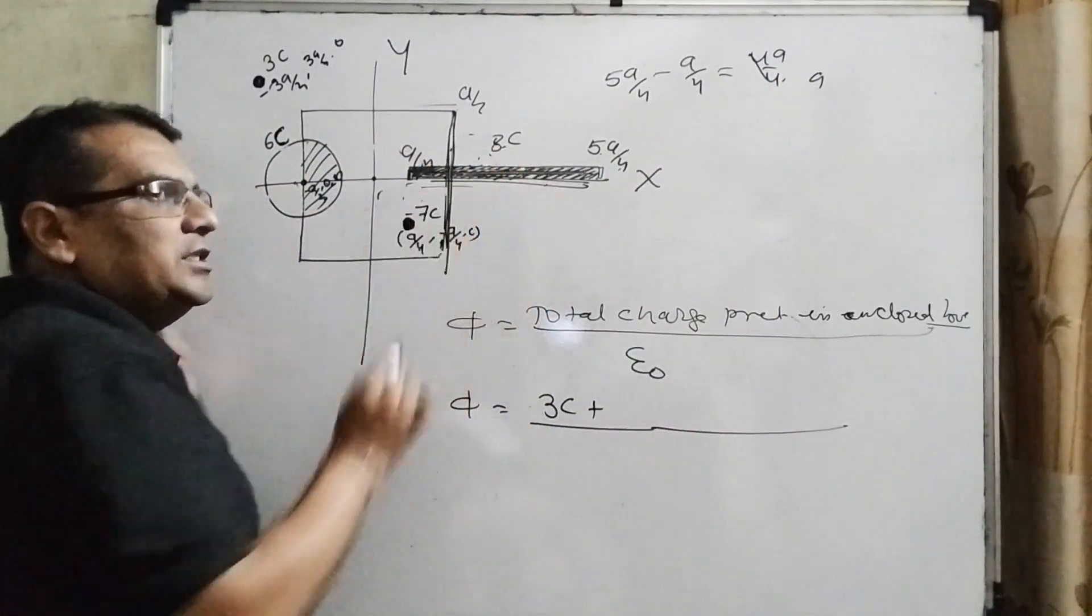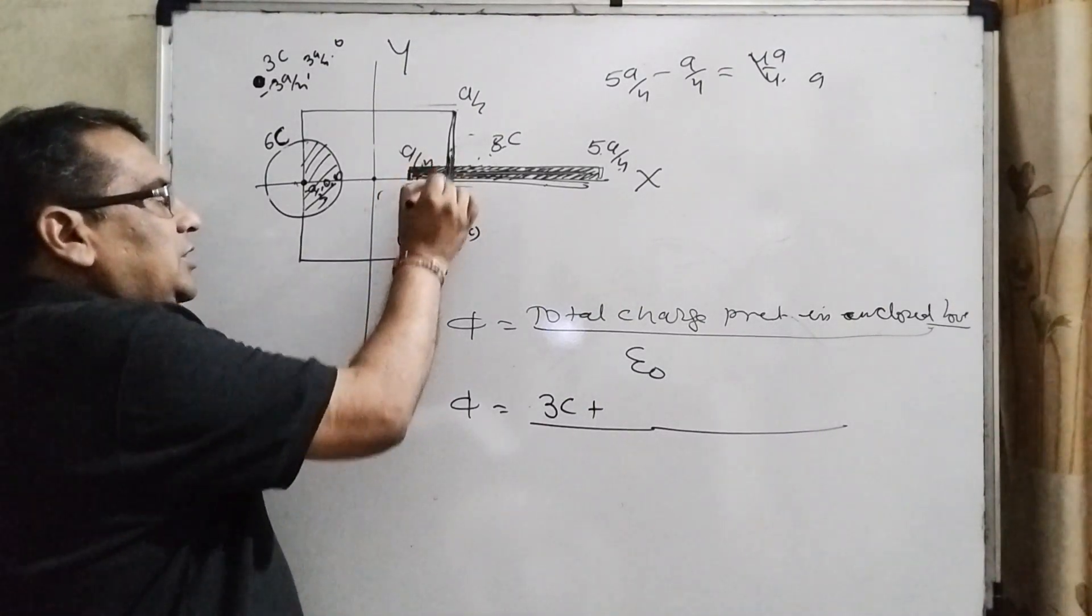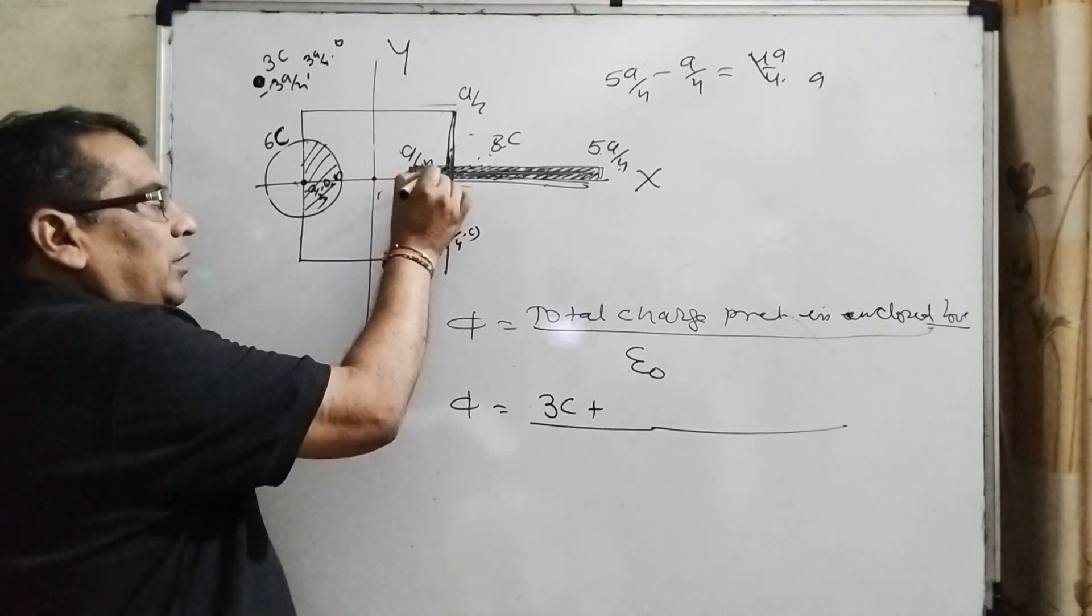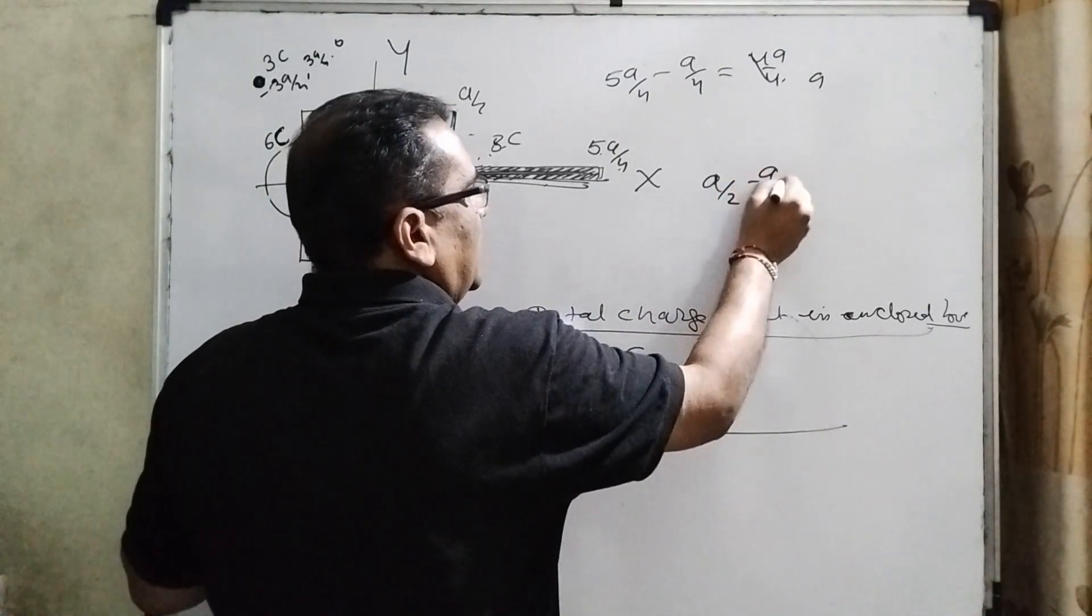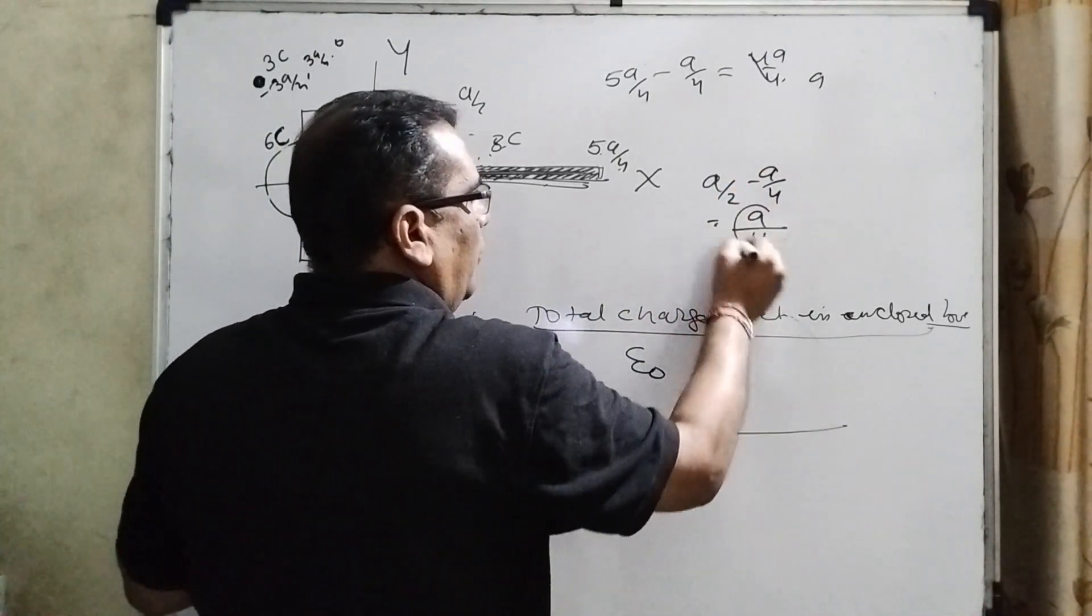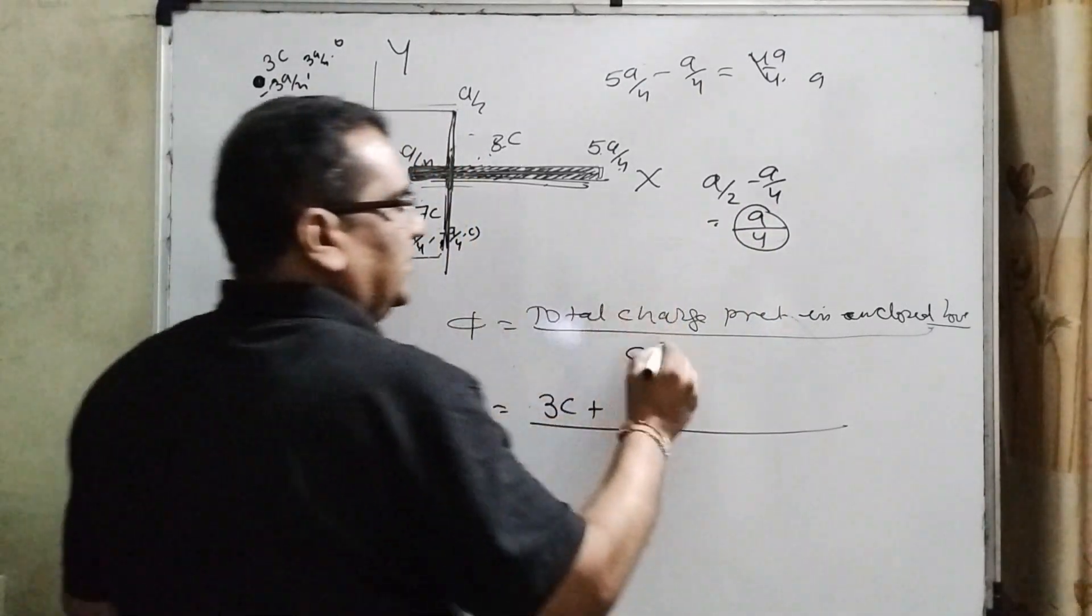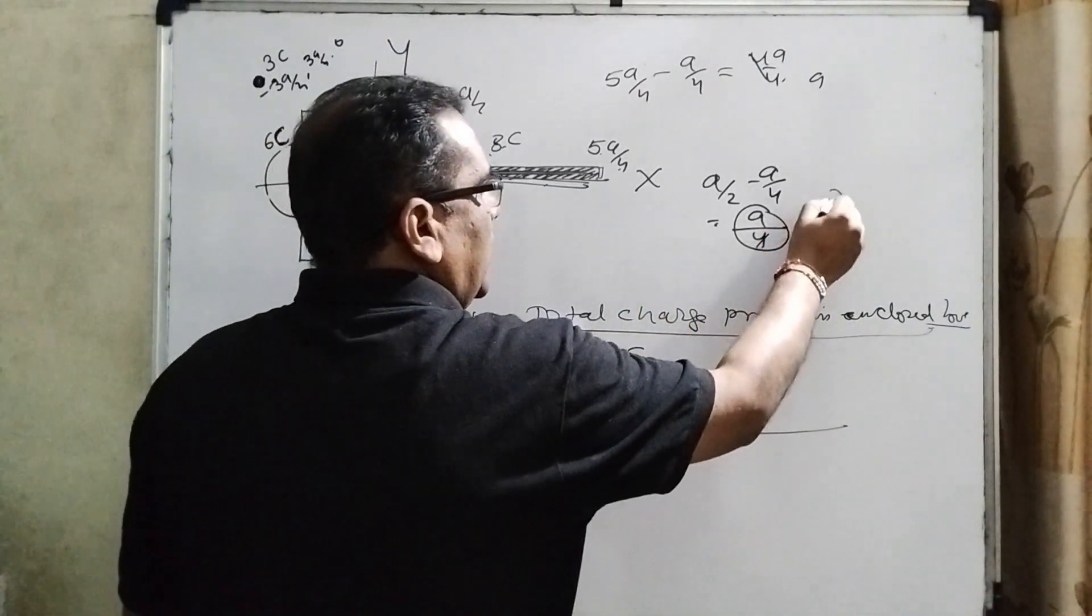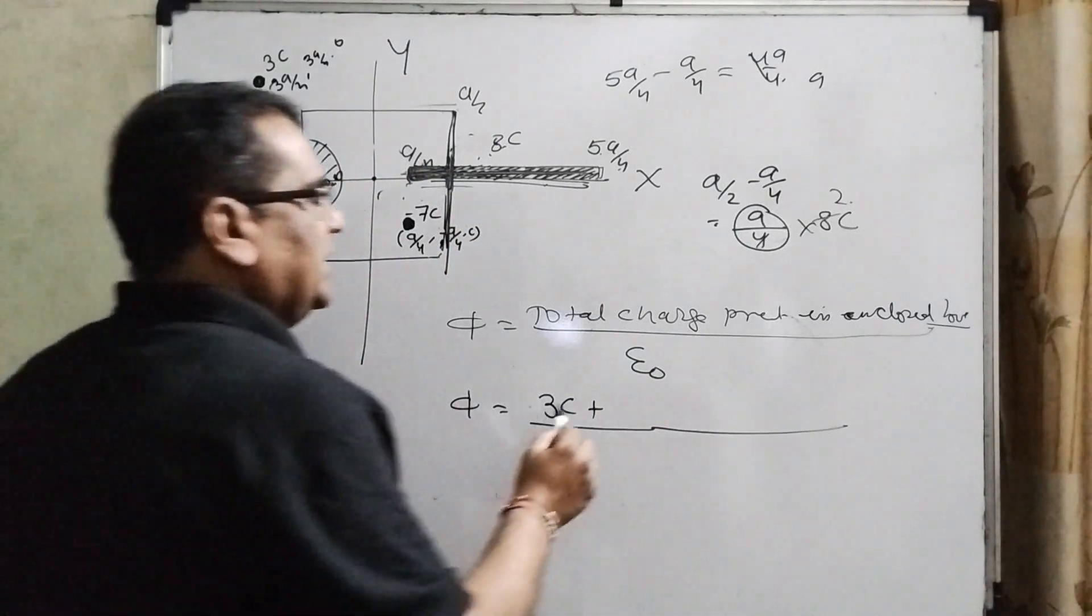And total a length and total charge is 8C. Now, the charge from this—only this part is inside the enclosed figure. So a/2 - a/4, you can see that only a/4 part, a/4 length of the 8C. 8C, now how much? a/4 divided by a is 1/4, so 8C times 1/4 equals 2C charge present inside.